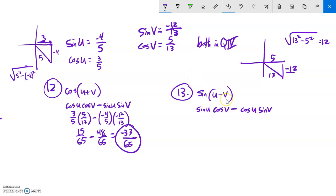And the sine value of them subtracted. Let me plug in these values. Sine of u is negative four-fifths, cosine of v is five-thirteenths, minus cosine of u is three-fifths, and sine of v is negative twelve-thirteenths. So then from here I can do some multiplication. Negative 20 sixty-fifths, and notice this is a negative times a negative, so this will be plus 36 sixty-fifths. Negative 20 plus 36 is 16. Sixteen sixty-fifths.